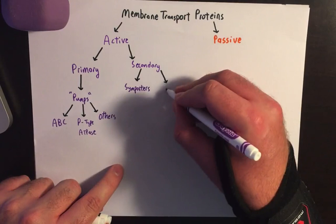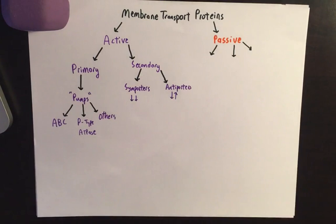For passive transport, we have uniporters, channels, and then pores. What's the difference between a pore and a channel? A pore is broad — it's always open and accessible to everything. Channels, however, tend to be just pores that have a gate attached to them.